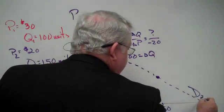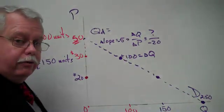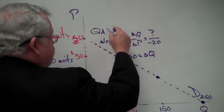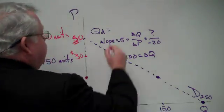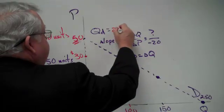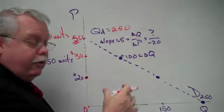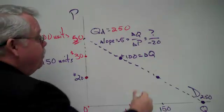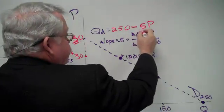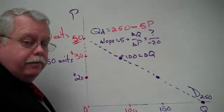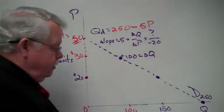The intercept is 250 units. So we know our demand equation now: Q = 250 minus 5P. That's the value for quantity when price goes to zero, and minus five is the slope. So we've got our demand equation pretty quickly.